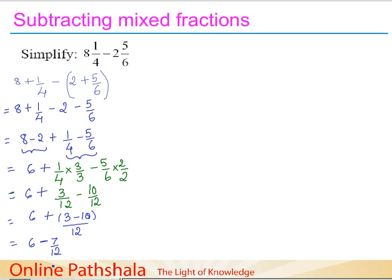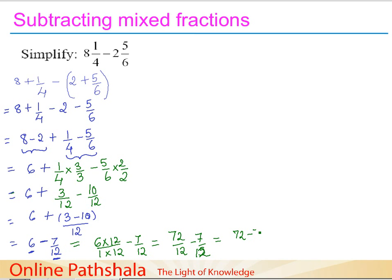We still need to simplify this, since it is not a complete fractional representation. We convert 6 into an equivalent fraction with denominator 12 by multiplying both numerator and denominator by 12, giving 72/12. So we have 72/12 minus 7/12, which equals 72 minus 7 over 12, giving us 65/12 as the final answer.